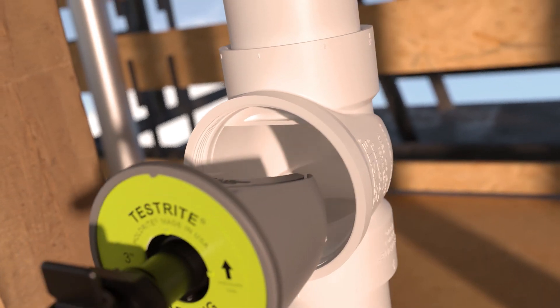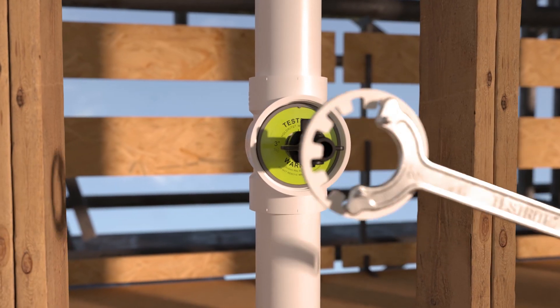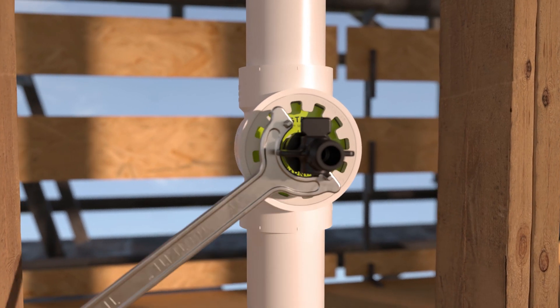Next, insert the Test Wedge into the clean-out tee with the pressure side pointing up. After installing the Test Wedge, secure it by reinstalling the spanner ring.